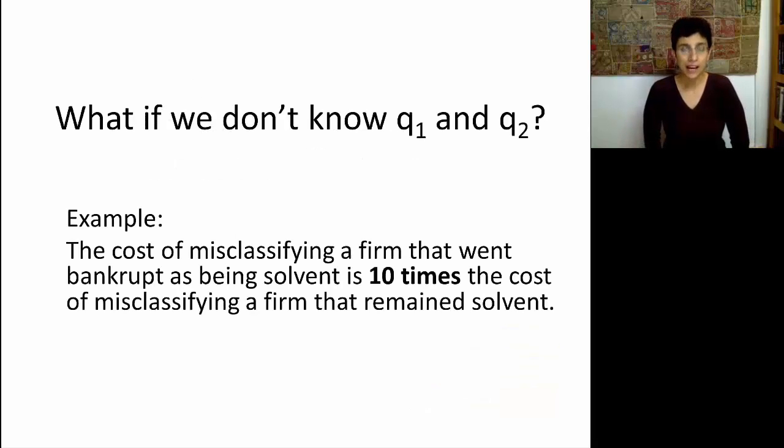Now what happens if we don't have costs Q1 and Q2? Sometimes it's very difficult to elicit these numbers. If you ask the business domain expert, how much is it going to cost me to misclassify or send an offer to a customer who will not accept my offer, maybe you'll get an answer. But for more difficult questions, perhaps it will be much harder to identify a cost. Here is an example where you have some information, but not the full information. The cost of misclassifying a firm that went bankrupt is going to be ten times the cost of misclassifying a firm that remained solvent. This is a typical example where we can at least give some kind of a ratio, some kind of a number on the ratio of misclassification cost. How much worse is it to misclassify one type versus the other? And this is much easier to elicit. So the question is, what do we do if we have this type of information, but we don't have information about Q1 and Q2?